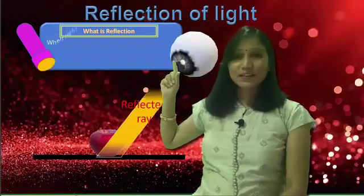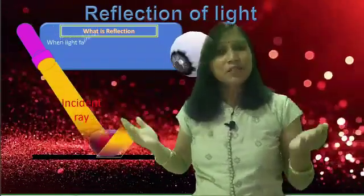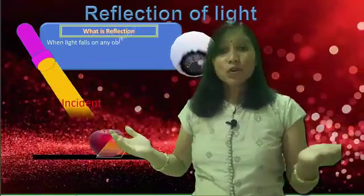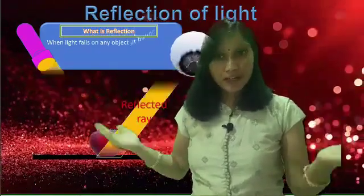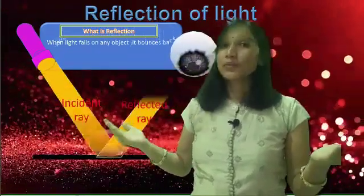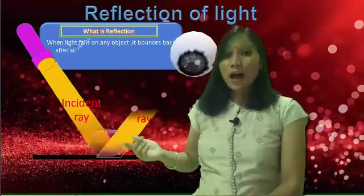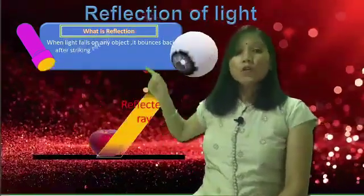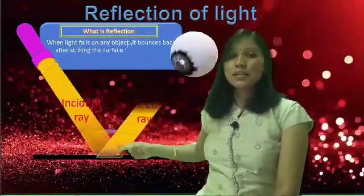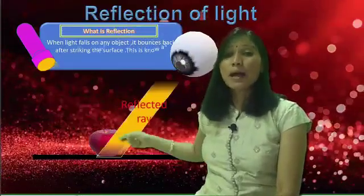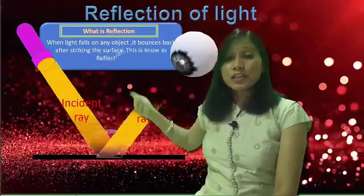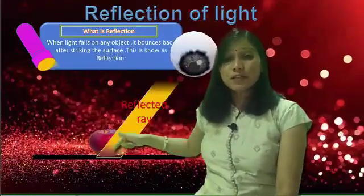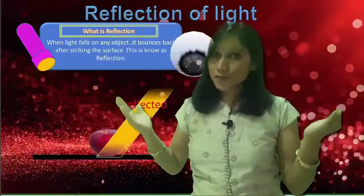Now I will explain the terms related to reflection of light. Let us first understand what reflection is. When light falls on any object, it bounces back after striking the surface. This is known as reflection.